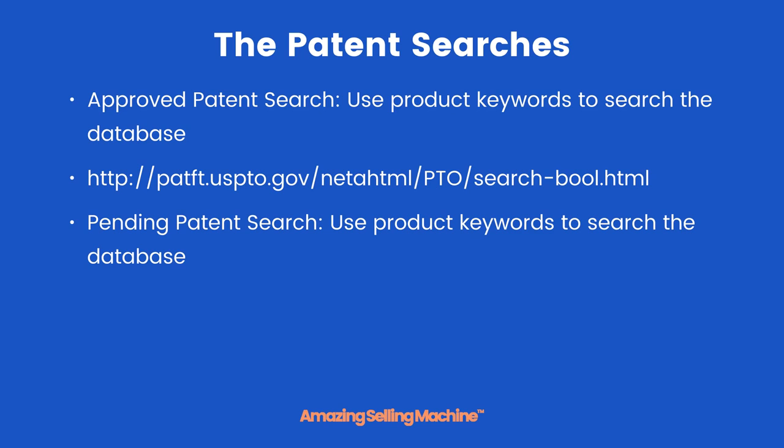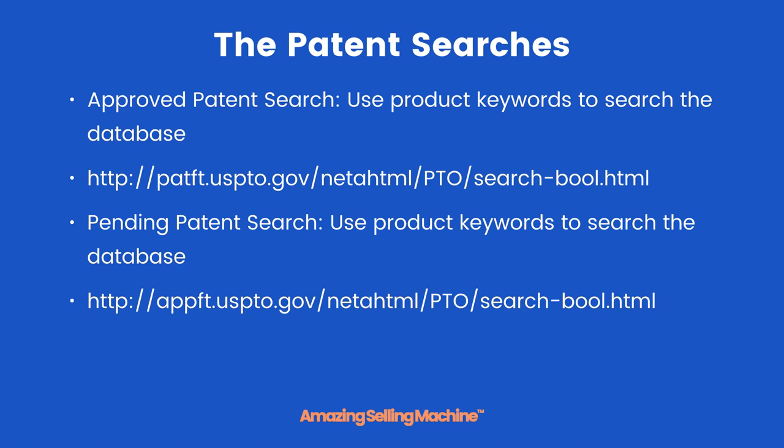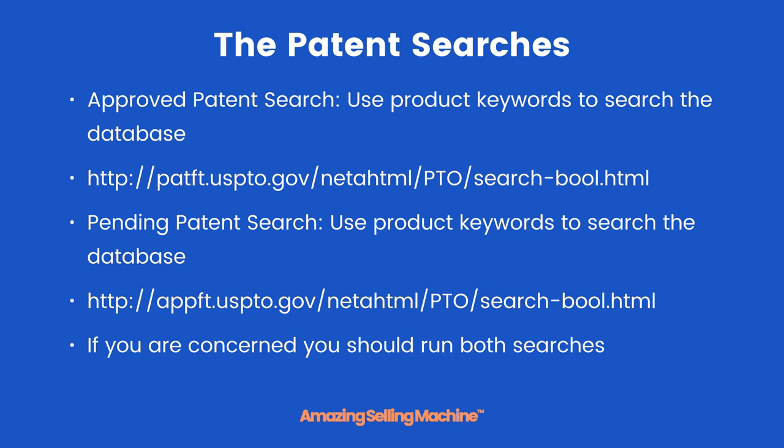Second, there is the pending patent search. Use product keywords to search the database again, however this is for pending patents. Remember, if you find anything in the pending patent search we recommend you still avoid that product. The URL for that search is also in the PDF below this lesson. If you are concerned about a product in your list that it might have a patent, you should run both searches and not just the approved one.